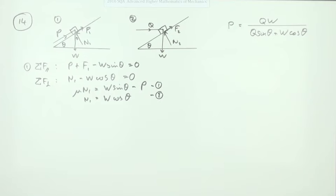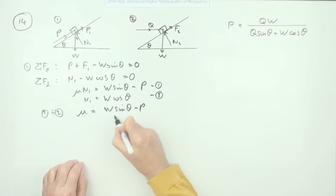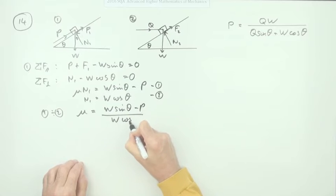I'll take those as my two equations, and then if you divide them, one divided by two, then you've got μ equals W sin θ minus P over W cos θ.